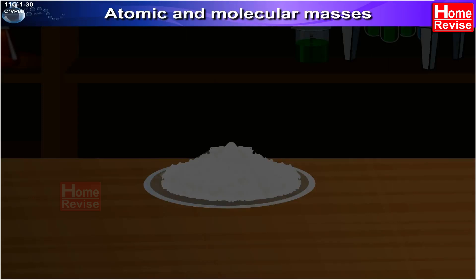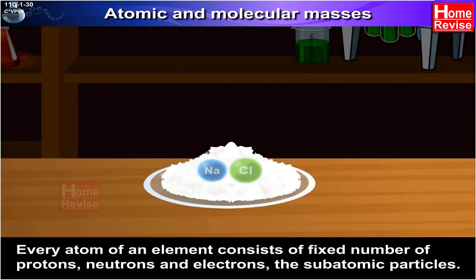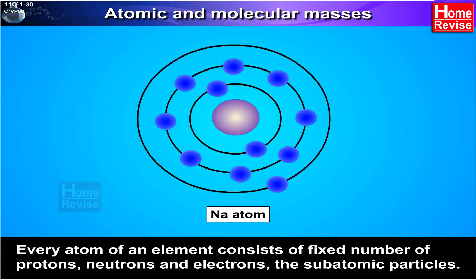Atomic and molecular masses. Every atom of an element consists of a fixed number of protons, neutrons, and electrons — the subatomic particles.